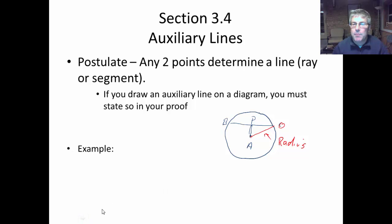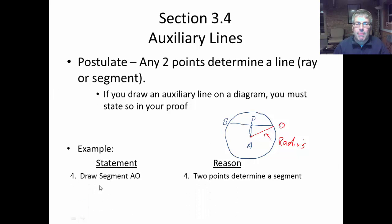So here's our example. If we drew in this auxiliary line, we've got to put that in our proof. So I drew segment AO, and my reason would be two points determine a segment. So I might also draw in AB. For the same reason, well, that helps me out a lot because now I have two congruent segments and I have radii of a circle are congruent. So that is an example of how and why you would use an auxiliary line in a proof.